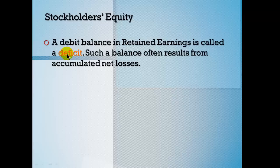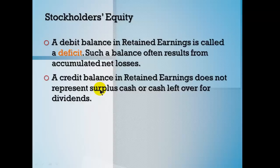A debit balance in retained earnings is called a deficit — that happens when you have net losses period over period. A credit balance means since inception you've had more net income than net loss. The key thing to realize is that retained earnings does not represent cash or any surplus cash. It is simply the mathematical accumulation of reported net income or net loss since inception. You cannot say that a million dollars of retained earnings means you have a million dollars of cash.